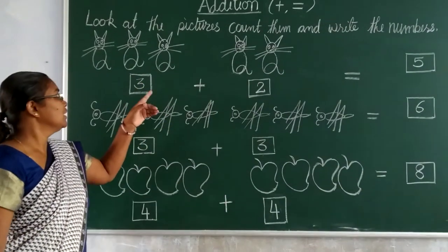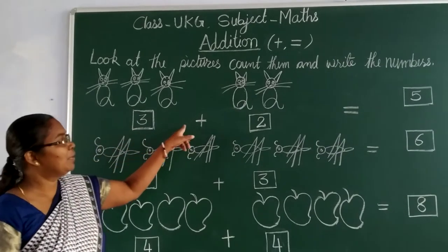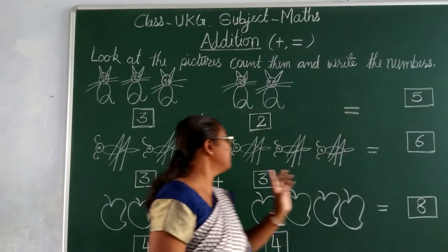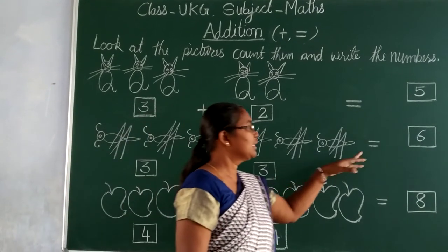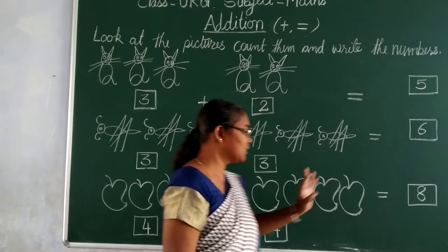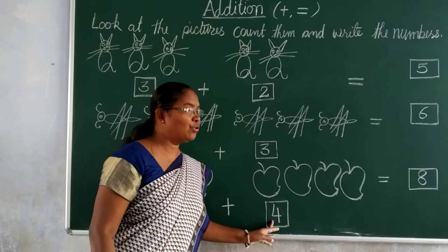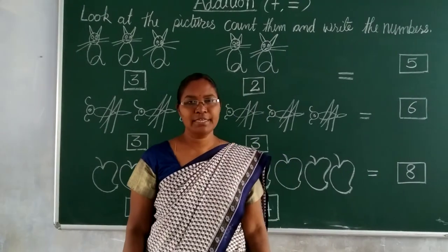Let us read once more. 3 plus 2 is equal to 5. 3 plus 3 is equal to 6. 4 plus 4 is equal to 8. Thank you.